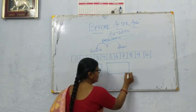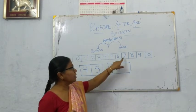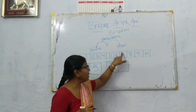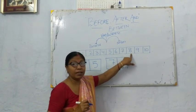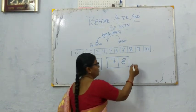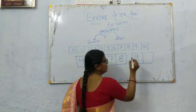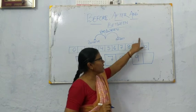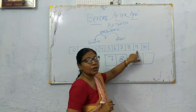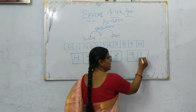Next example: 7. Check the number strip — which number comes after 7? The answer is 8. Next: 9. Which number comes after 9? See the right side of 9 — the number is 10.